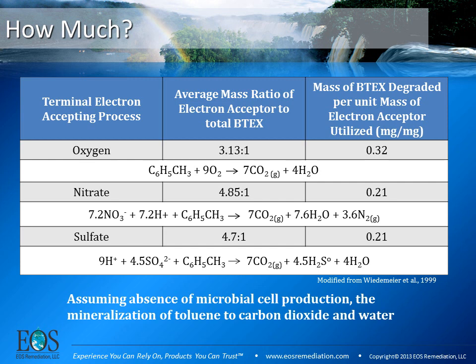So how much electron acceptor do you need? Wiedemeyer did some great work back in 1999, and here I've tabulated some of his results. The first column shows the average mass ratio of electron acceptor to total BTEXs. Taking complete mineralization of toluene to carbon dioxide and water, it takes 3.13 mass units of electron acceptor to one mass unit of BTEX. The second table shows mass units of BTEX degraded per mass unit of electron acceptor — one mass unit of oxygen degrades 0.32 mass units of BTEX. You actually need a lot less oxygen to address the contamination than you would for nitrate or sulfate.